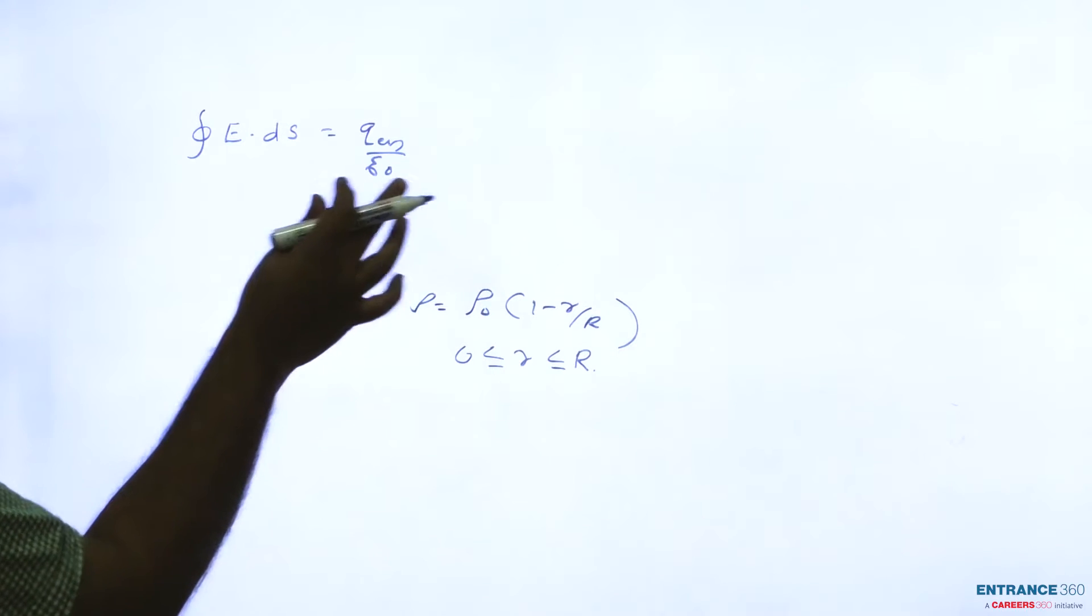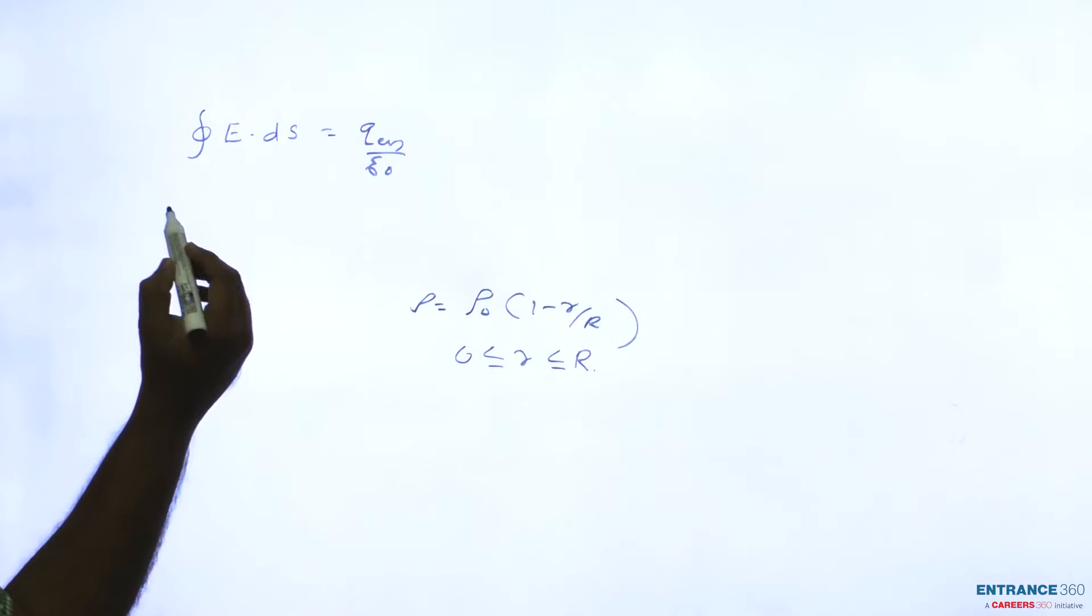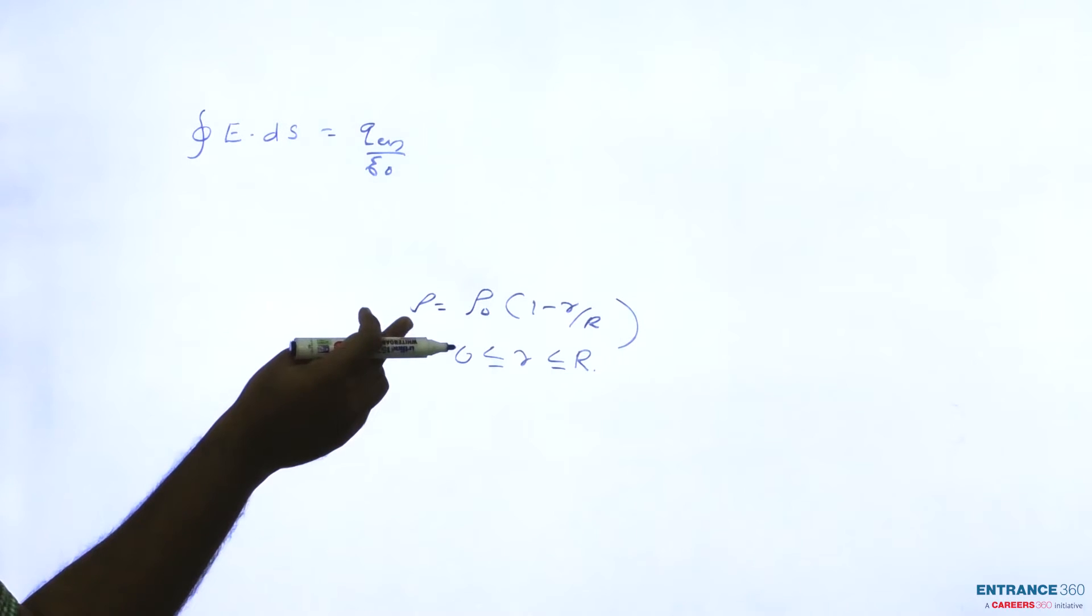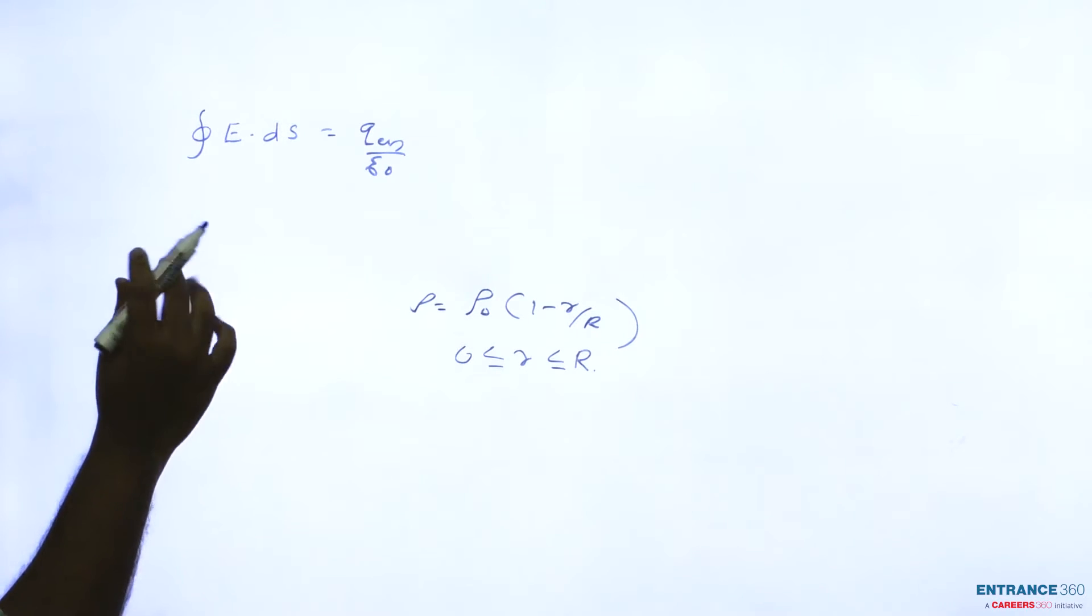So for that we have to find total charge enclosed by the sphere. Now, the charge density is given as rho equal to rho_0 into (1 minus r by R).